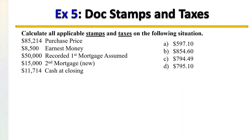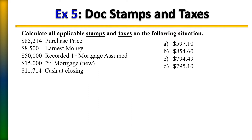In this example we're asked to calculate all applicable stamps and taxes on the following situation. Here you have all the data on the purchase price, earnest money, recorded first mortgage assumed, second mortgage new, and cash at closing.